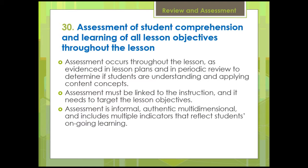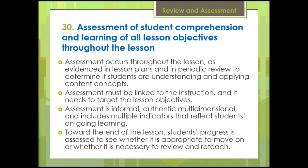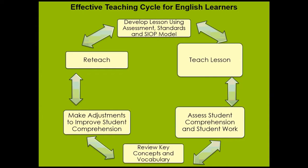Multiple indicators provide specific student demonstrations directly related to the content and language objectives. Toward the end of the lesson, students' progress is assessed to see whether it is appropriate to move on or whether it is necessary to review and reteach. Assessment should be periodic and ongoing, and it could be individual or group administered. Effective sheltered instruction involves reviewing important concepts, providing constructive feedback through clarification, and making instructional decisions based on student response. This teach, assess, review, and reteach process is cyclical and recursive.